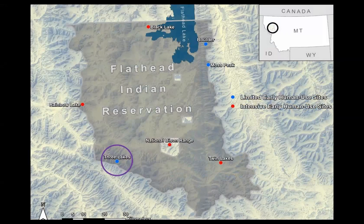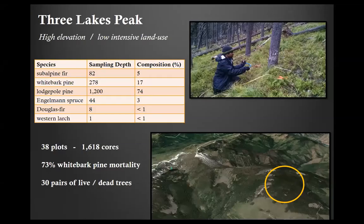The first site is Three Lakes Peak in the southern range on the reservation. We had 38 plots, about 1,600 trees recorded, with about 73% whitebark pine mortality across the site. From that, we were able to identify 30 viable pairs of live and dead trees. The general species composition is mostly lodgepole pine at about 74%, but whitebark is a notable component at about 17%.